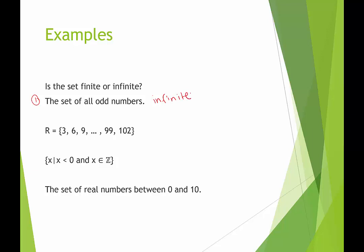R is the set containing {3, 6, 9, ..., 102}. Even though it has the dot, dot, dot, we know that that just fills in the numbers, the multiples of 3 between 9 and 99, and this indicates to us that this is a finite set.